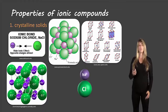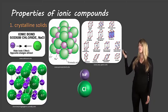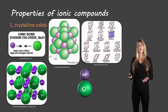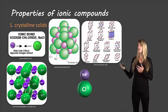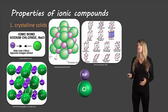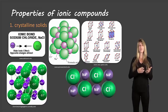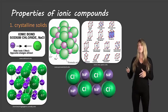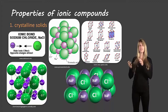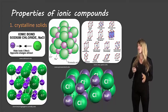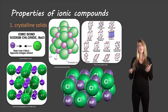Each formula unit can be attracted to other formula units to form the crystal structure, and there are many possibilities for the shape of that crystal. Let's look at an animation: we start with a sodium chloride formula unit, and other formula units come and are attracted to it — positive charges toward negative and negative toward positive. This becomes a 3D structure as more formula units join, forming the ionic crystal.